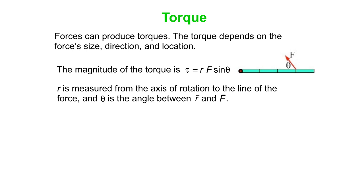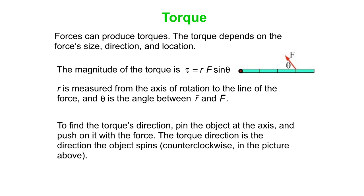Theta is the angle between the line you measure R along and the line of the force. You could say that is actually the angle greater than 90 degrees, but it doesn't really matter because sine of theta and sine of the complementary angle are the same thing. To find the torque's direction, pin the object at the axis, then push on it in the direction of the force at the place where the force is applied. The torque direction is the direction the object spins — and the object in the picture will go counterclockwise because of that particular force.